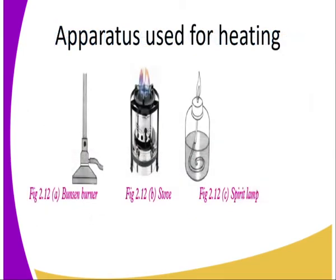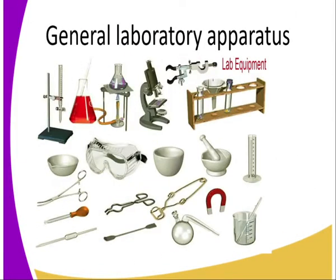What about the sources of heat in the laboratory? When we need to heat, we can use a Bunsen burner, a gas stove, or a spirit lamp — all of them will give us the heat required in a given experiment. We can also use an electrical heater, which will enable us to heat a given volume so that we can raise its temperature.